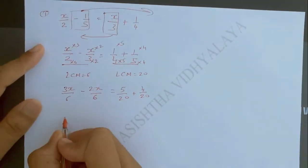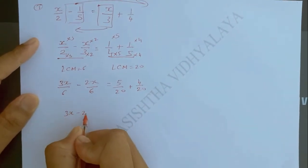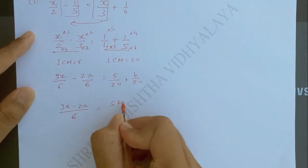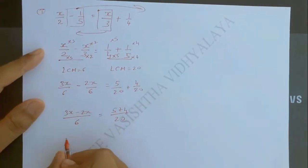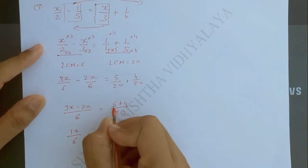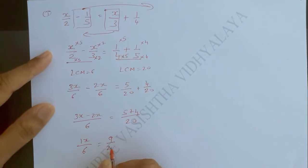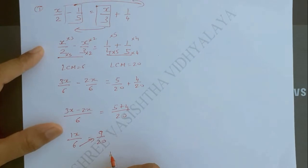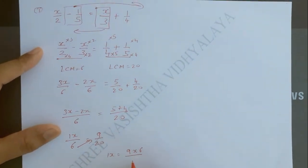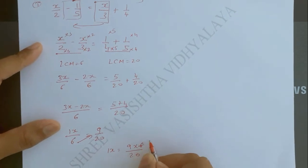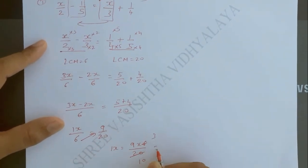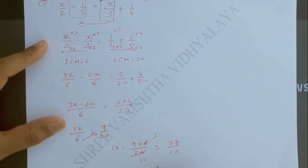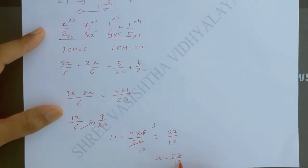Now, here both LCM are the same, so we will write it only one time. So 3x minus 2x upon 6 equal to 5 plus 4 upon 20. Then 3x minus 2x will be 1x upon 6 and 5 plus 4 will be 9 by 20. Then 6 is going to transpose to the RHS side. So 1x is equal to 9 multiply 6 upon 20. Now, 2 table 3 times, 2 table 10 times. So 9 by 3 is 27 upon 10. So x is equal to 27 upon 10.